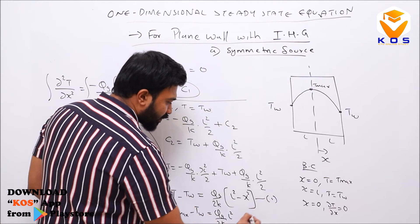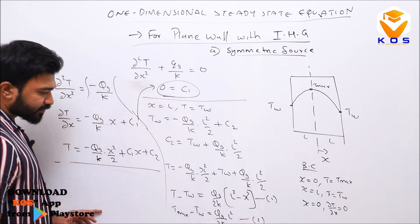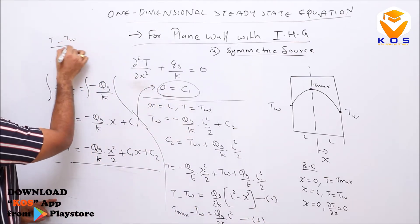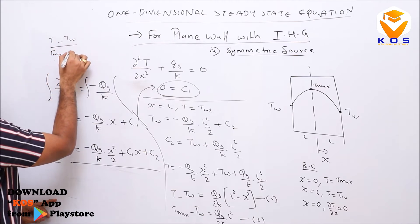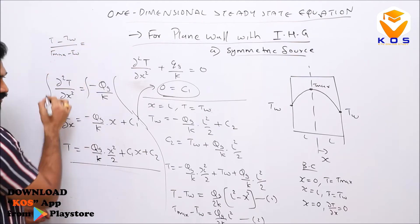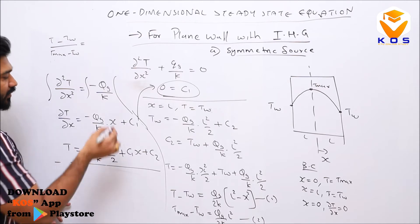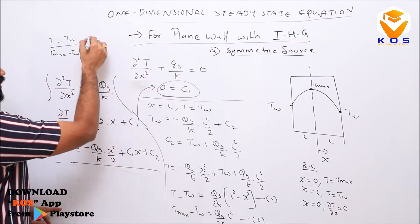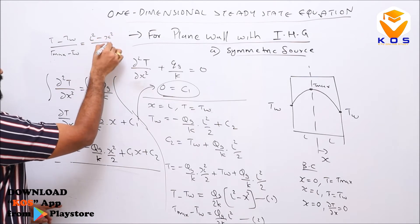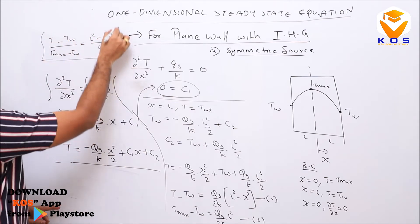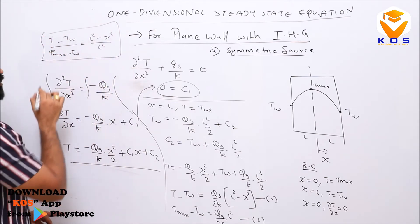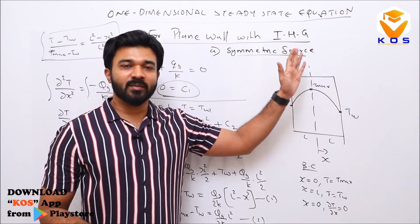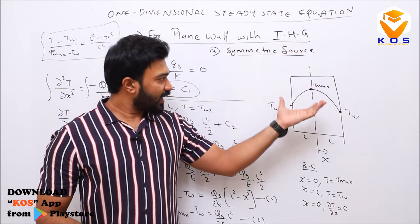Dividing these two equations gives the normalized temperature distribution for a symmetric plane wall with internal heat generation: (T − T_w) / (T_max − T_w) = (L² − x²) / L².